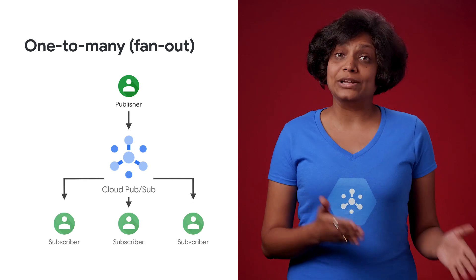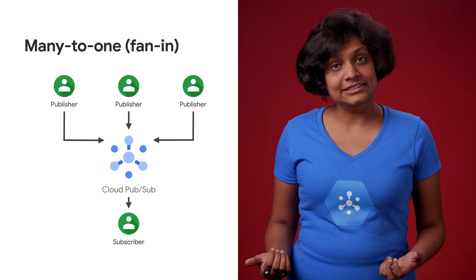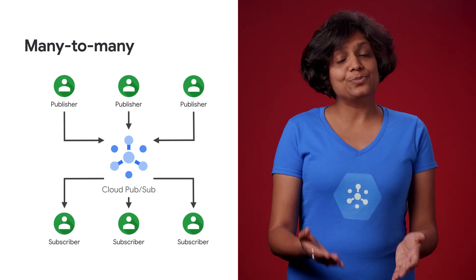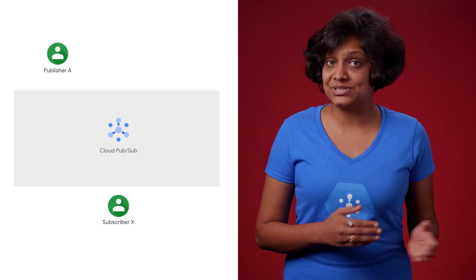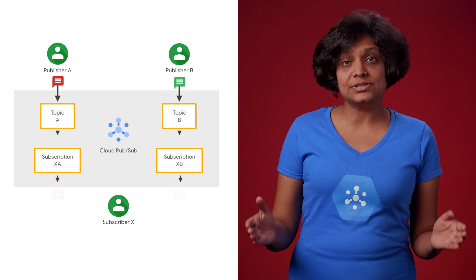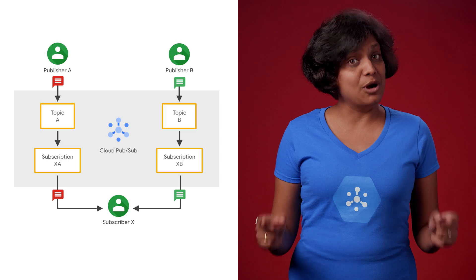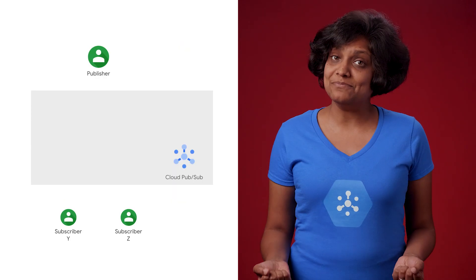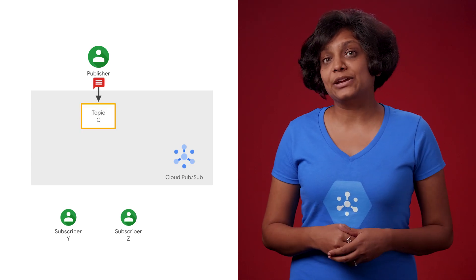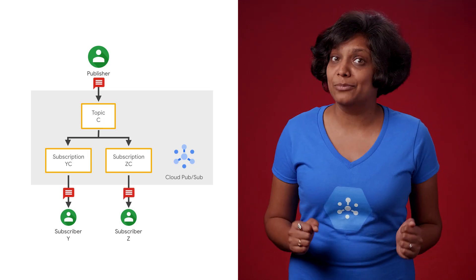Communication can be one-to-many, also called fan-out, many-to-one, or fan-in, and many-to-many. If subscriber X wants to receive messages from two different publishers A and B, it can be achieved by creating two subscriptions corresponding to the topics for each publisher, which is a many-to-one model. Similarly, if two different applications want to subscribe to the same message from a publisher, then it can be achieved by creating two different subscriptions from the same topic, which is a one-to-many model.